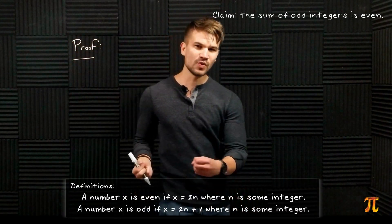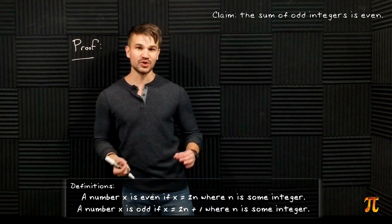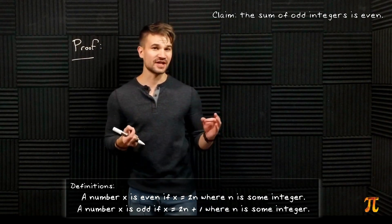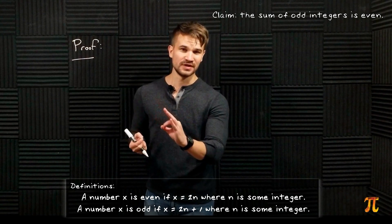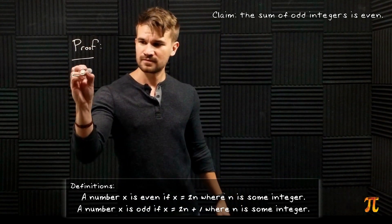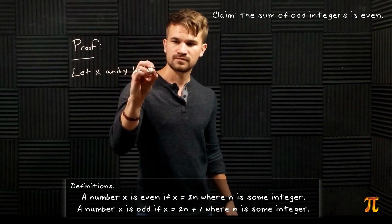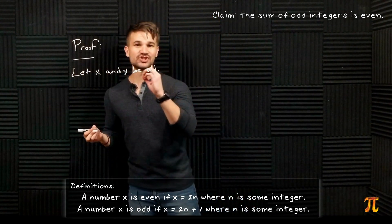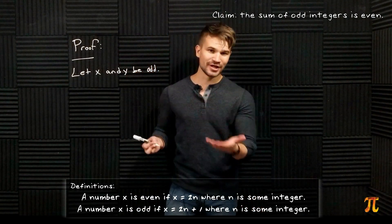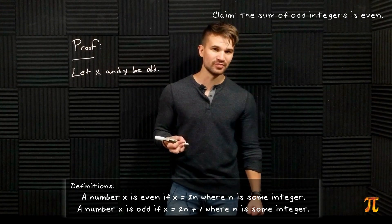So we want to show that the sum of two odd numbers is even. So let's let x and y be odd numbers. We're not going to pick specific odd numbers, we're going to stay general. So let's just let x and y be odd numbers. Then by definition we can say that there's some integer n such that x is 2m + 1 and some integer m such that y is 2m + 1.